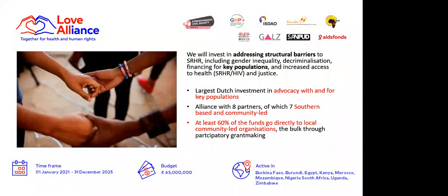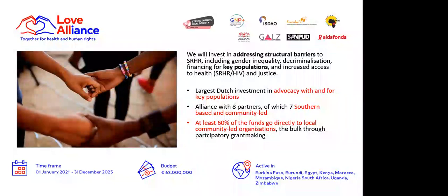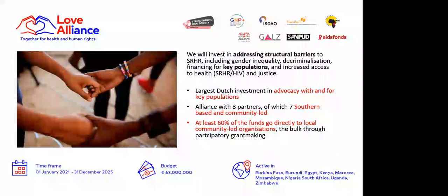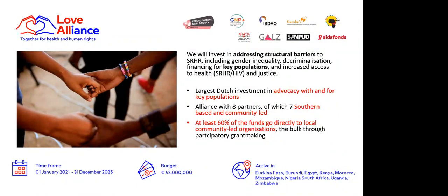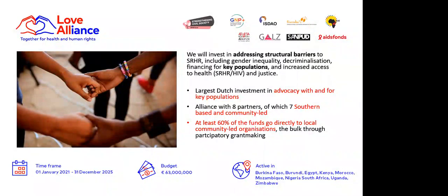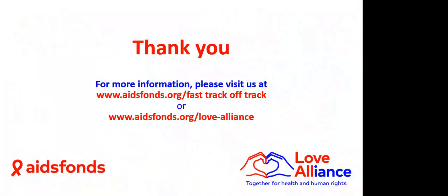A recent impact study from the Robert Carr Fund shows that long-term, flexible, and core funding is critical for civil society and community-led networks in the global HIV response. The Love Alliance has 63 million euros available — an advocacy-focused program with and for key populations — where at least 60% of the funds go directly to local community-led organizations. The bulk uses participatory grant-making, meaning communities actually decide themselves what and who gets funded based on the needs they see. More information is available on the AIDS Funds website.